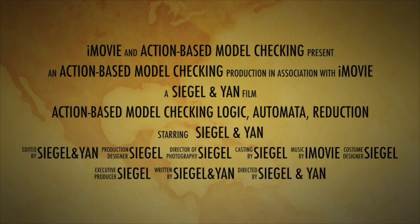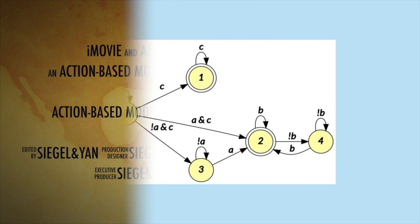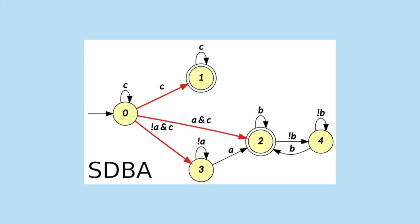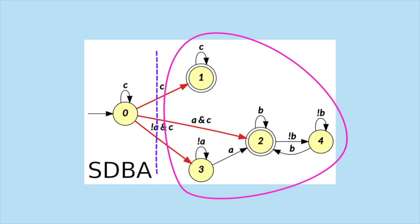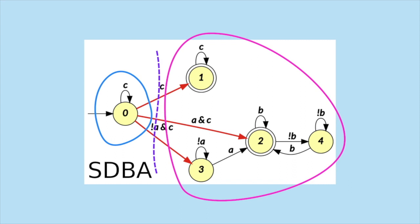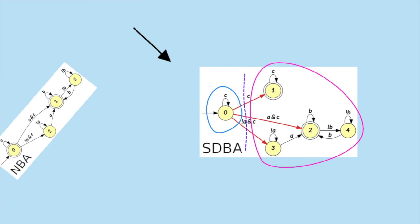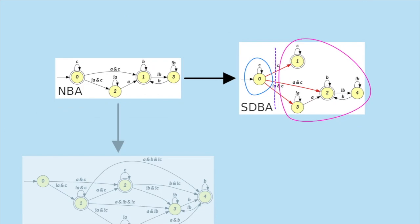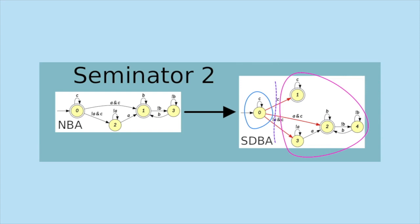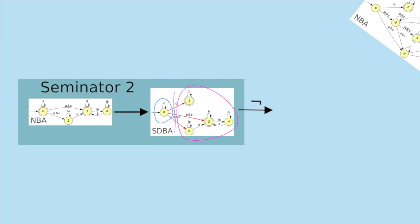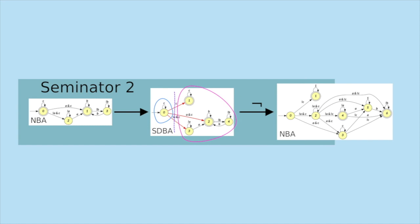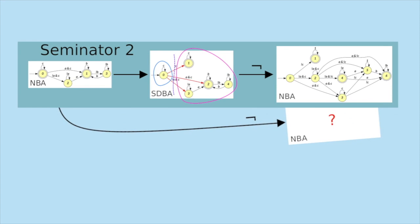This is a semi-deterministic Büchi automaton. If we highlight non-deterministic choices, we can see that the automaton can be split into two parts: a deterministic part that contains all accepting cycles, and a non-deterministic part that cannot be reached from accepting states. Since it is not fully deterministic, it can be built from any non-deterministic Büchi automaton and can be smaller than an equivalent deterministic automaton. SEMINATOR is the tool that provides such a transformation, and version 2 now implements complementation. If you wonder whether complementation via semi-determinization can be better than direct complementation, listen to the full talk.